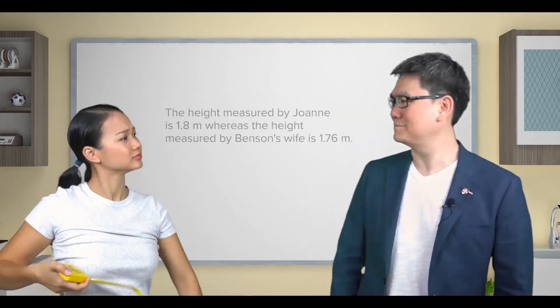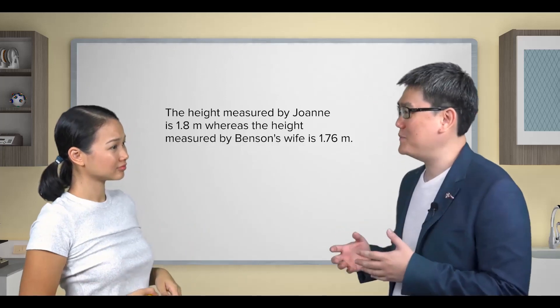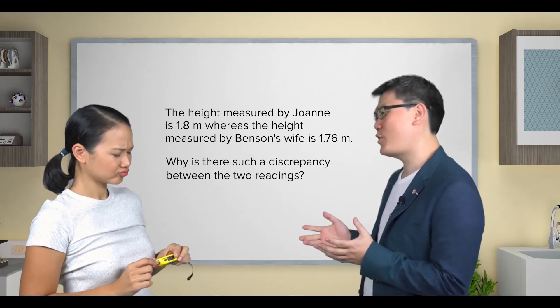The measuring tape says you're about 1.8 meters. I wish that was my height, but my wife measured me and said I was 1.76 meters. Why do you think there is such a discrepancy?